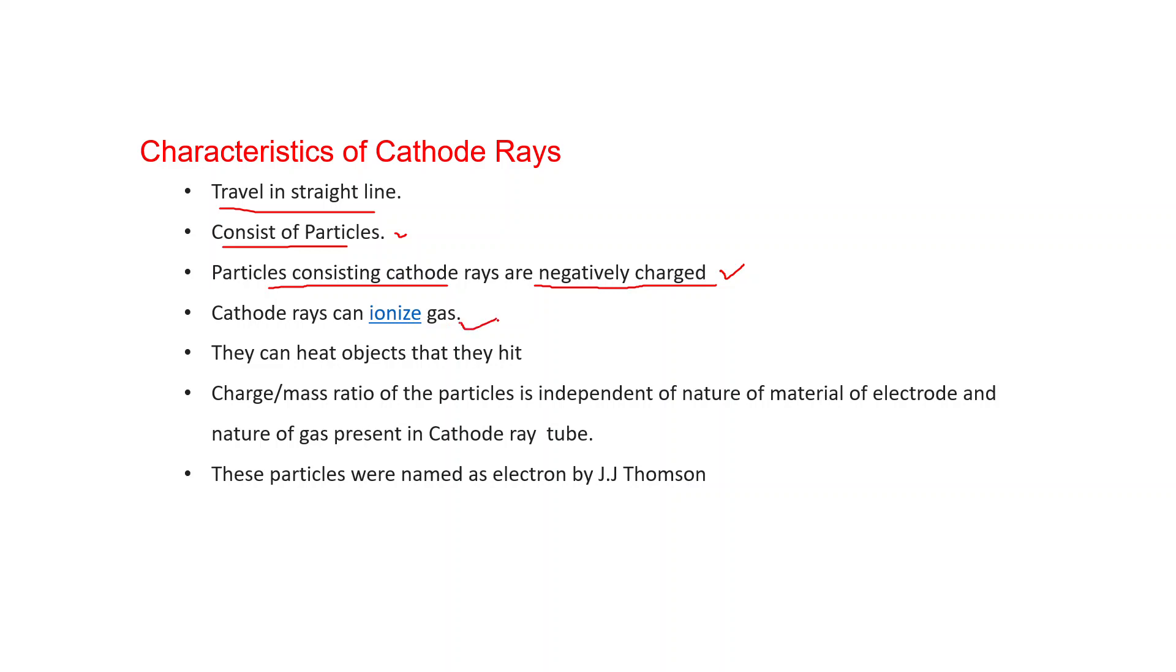Cathode rays can ionize gas. They can heat objects that they heat. You can see that the heating effect is observed. Charge to mass ratio of the particles is independent of nature of material of electrode and nature of gas present in cathode ray tube. It means whatever the metal electrode or whatever the gas taken in the cathode ray tube, the E by M ratio is always constant for the particles of these rays. And these particles were named as electron by J.J. Thompson.